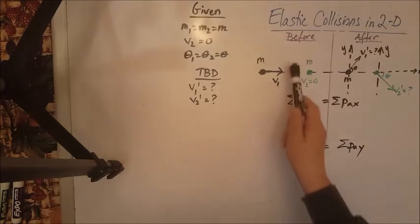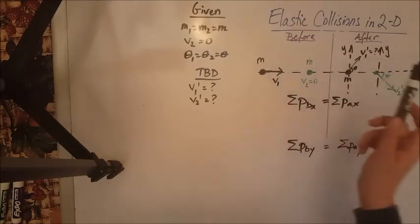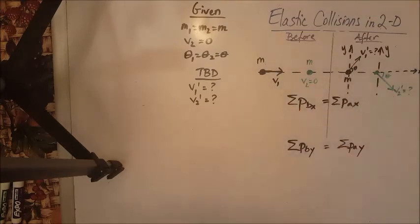Before collision, we only have one vector that's horizontal, doesn't have to be resolved. And after collision, we have two vectors that must be resolved.